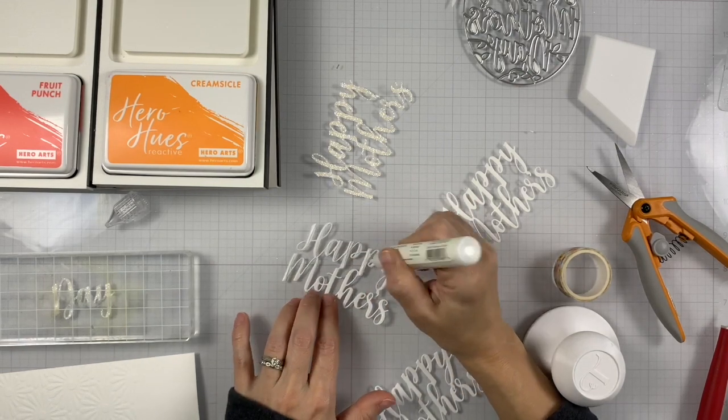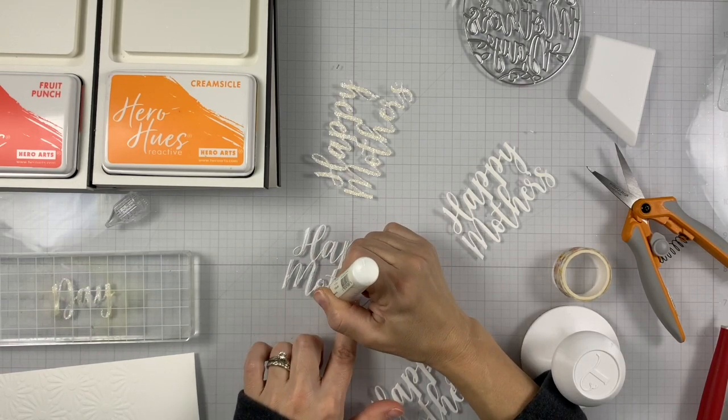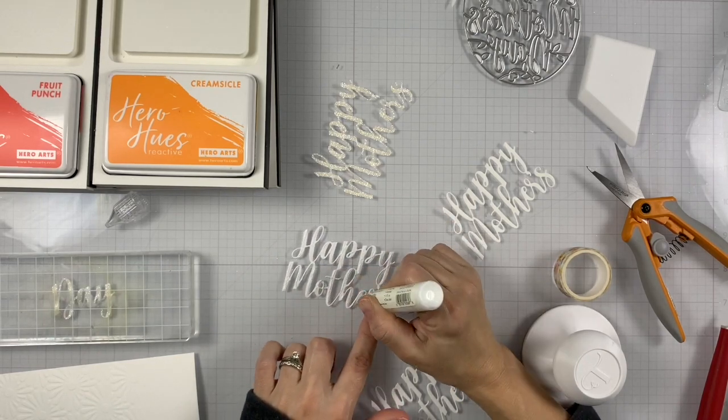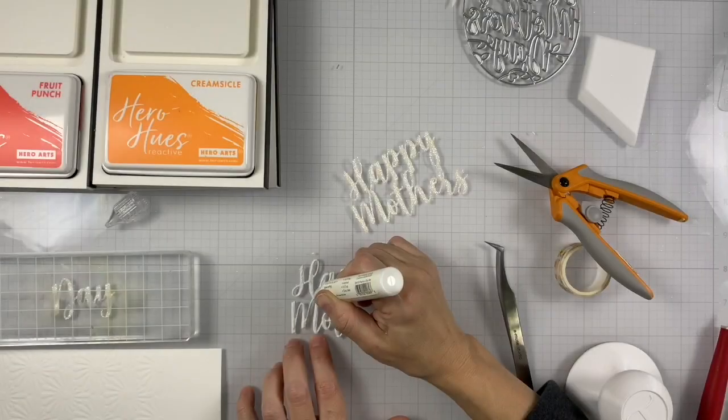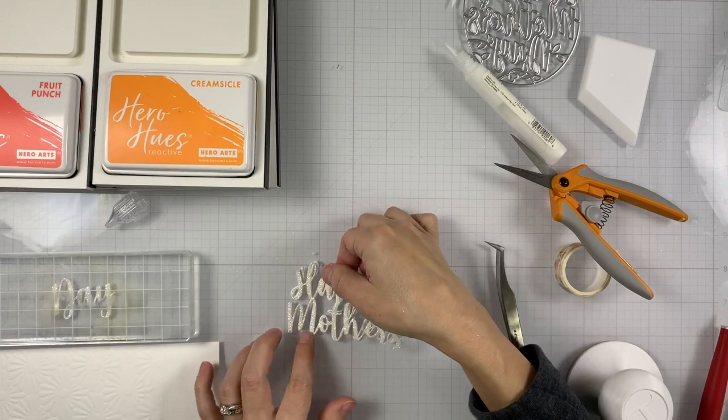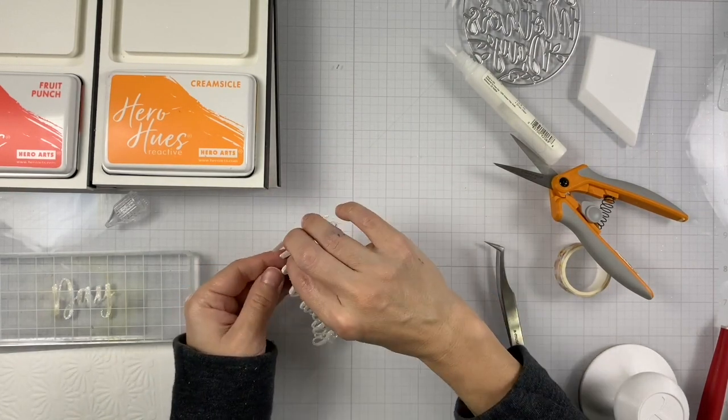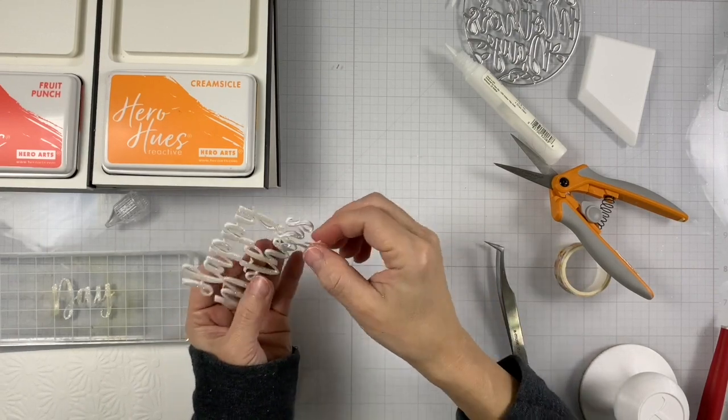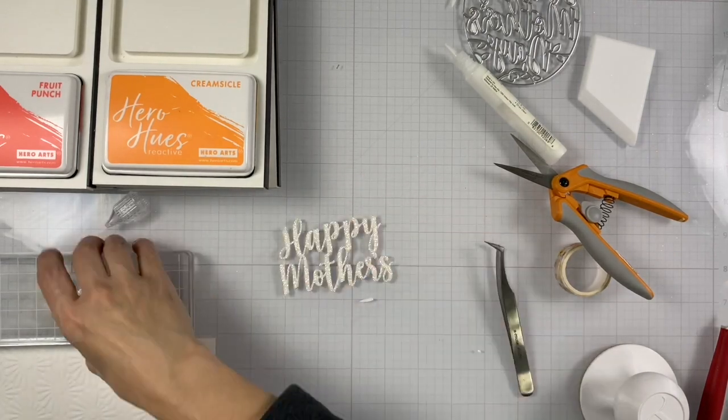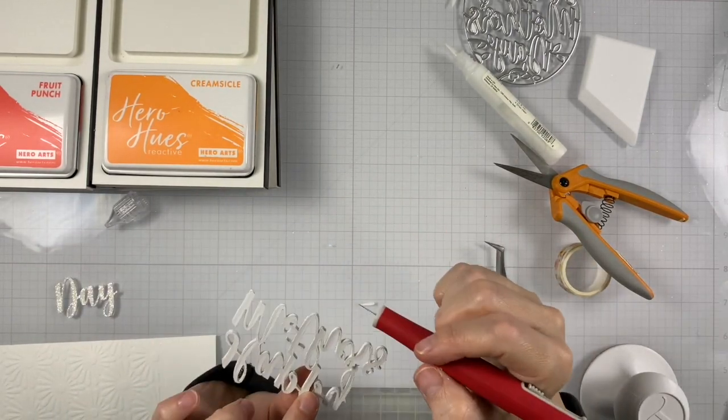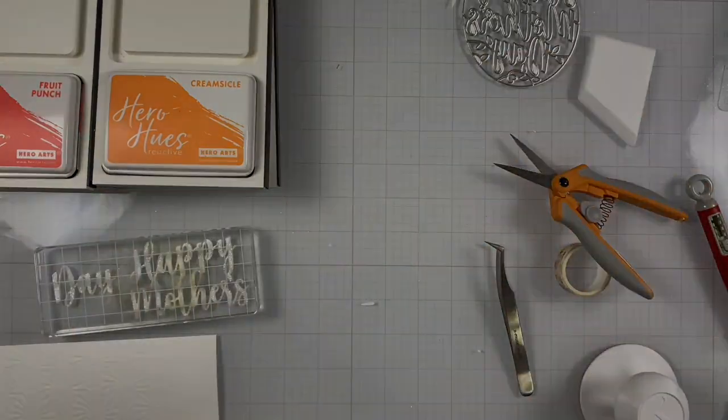And I'm repeating the same thing with the second part of that die-cut. Now we're doing the last layer. And again, I will once make sure that they're all nice and lined up. And I will press it down with the acrylic block. And then I will let it dry.